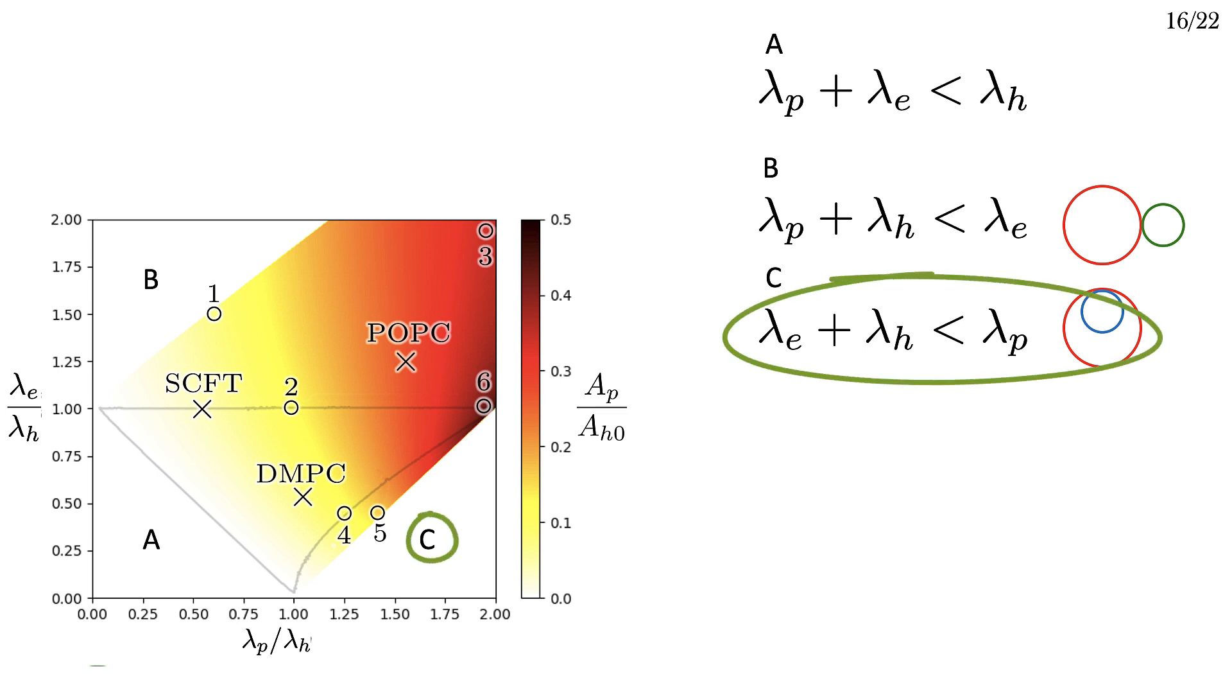Similarly, in region C, where lambda E plus lambda H is less than lambda P, the pore can lower its free energy by disconnecting, migrating into the hemifusion diaphragm rather than being a rim pore.